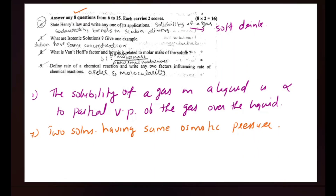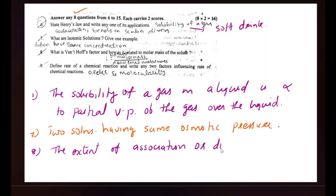What is Van't Hoff factor (i)? The Van't Hoff factor is a measure of the extent of association or dissociation when a solute is dissolved in a solvent.